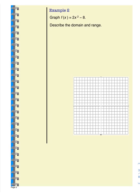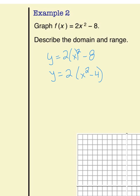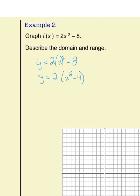Example 2: we are still graphing a quadratic function and describing the domain and range, but the quadratic function is not in factored form yet. We have y = 2x² - 8. We're going to factor this. Both terms have a 2 in common, so I'll factor out the 2: y = 2(x² - 4). Now I have x² - 4, which is the difference of two squares. The square root of x² is x, and the square root of 4 is 2.